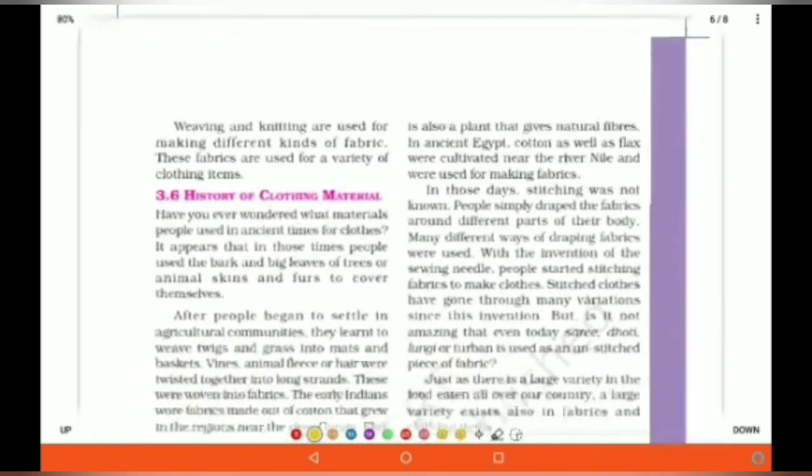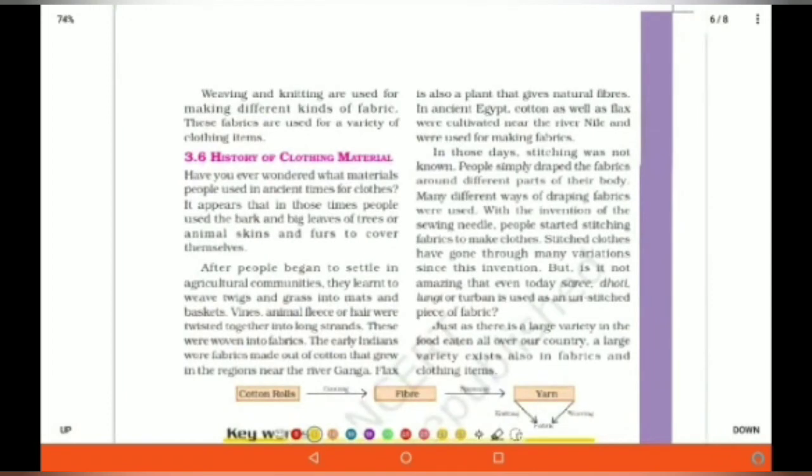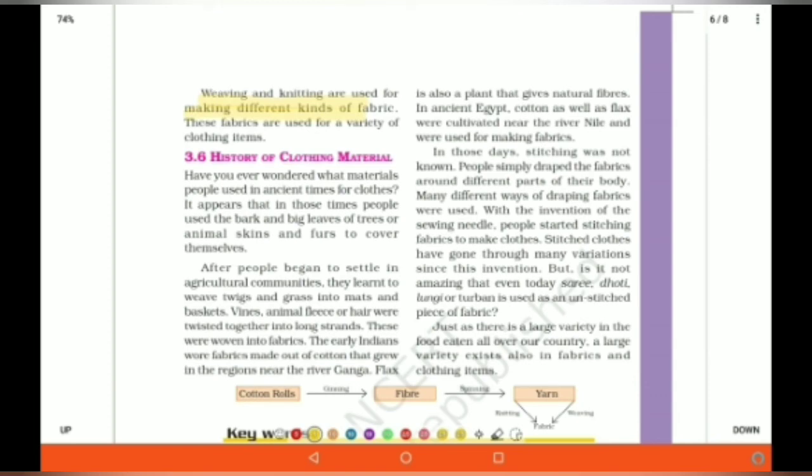Knitting is done in home by the hand and in some workshops on machines. Weaving and knitting are used for making different kinds of fabrics. For different kinds of fabrics, different steps is used. History of Clothing Material